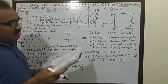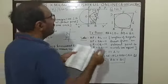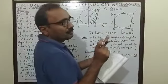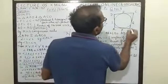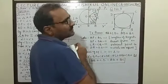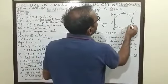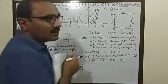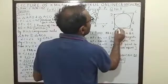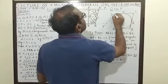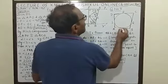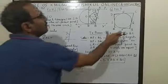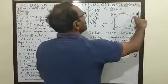Now, next question number 8. A quadrilateral ABCD is drawn circumscribed such that all sides of this quadrilateral touches this circle. Prove that AB plus CD equal to AD plus BC.